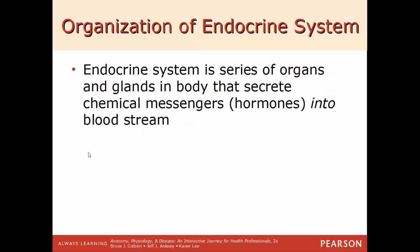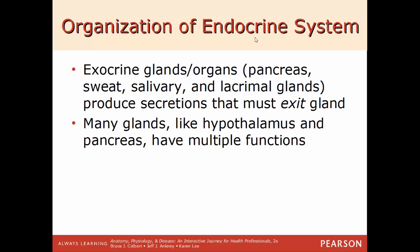The endocrine system is a series of organs and glands throughout the body that secrete chemical messengers called hormones, secreted into the bloodstream. 'Endo' means inside, and 'crine' refers to secretions going into the blood. The opposite are exocrine glands — like sweat glands, salivary glands, and lacrimal glands — which exit through a duct to the external environment. Many organs have multiple functions; the pancreas, for example, has both an endocrine and exocrine function, as does the hypothalamus.